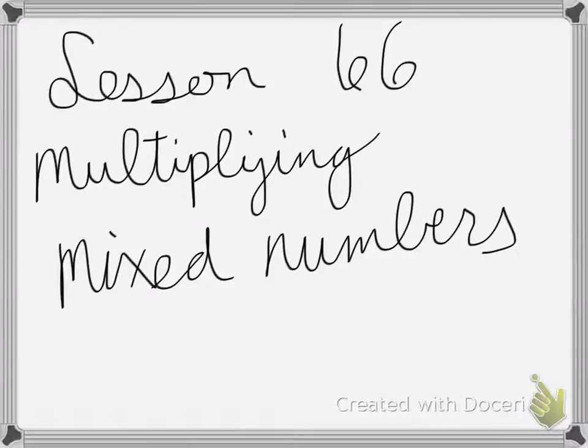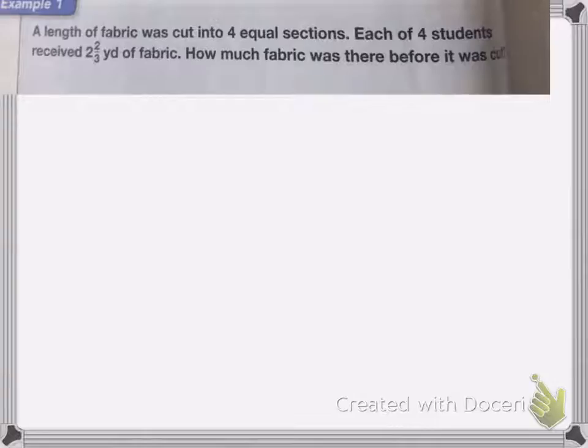All right, so lesson 66 is about multiplying mixed numbers. Here I have a length of fabric was cut into four equal sections. Each of the four students received two and two-thirds yards of fabric. How much fabric was there before it was cut?